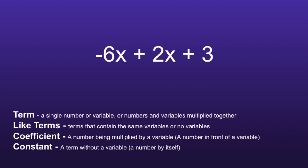There are four important vocabulary terms we are going to learn that are going to help you with expressions. The first one is term. A term is a single number or variable, or numbers and variables multiplied together. In this expression, the terms would be negative 6x, 2x, and 3.